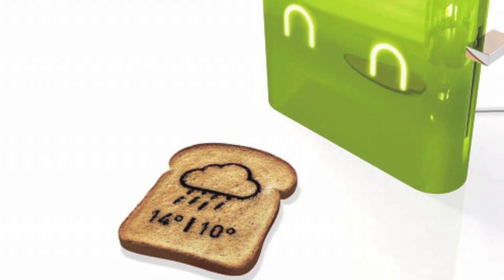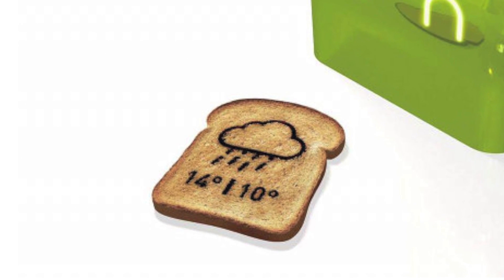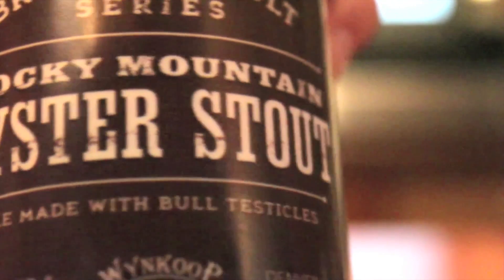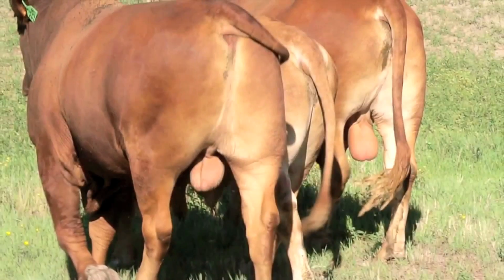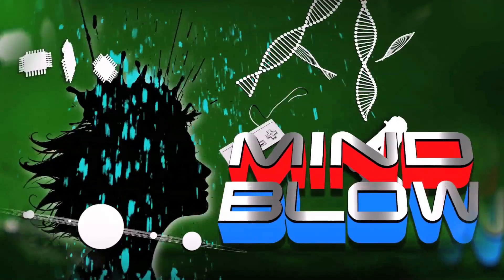A toaster that burns the daily weather forecast onto your toast. And Rocky Mountain Oyster Stout Beer is made with real bull testicles. Vsauce, Kevin here. This is Mind Blow.